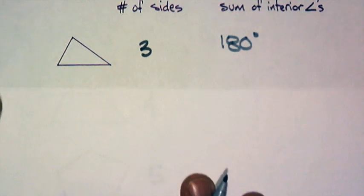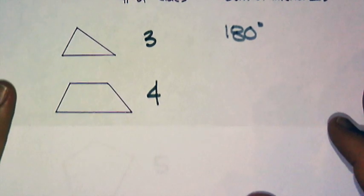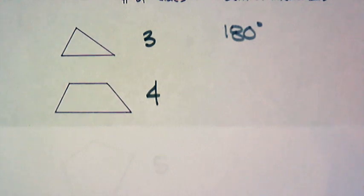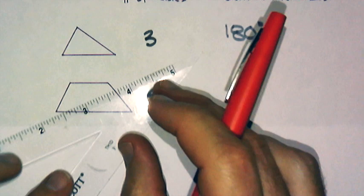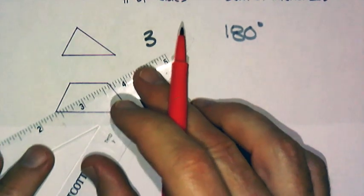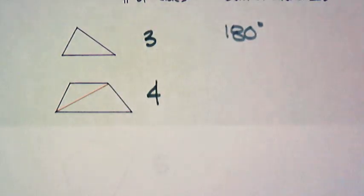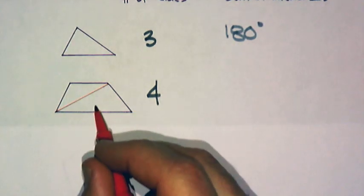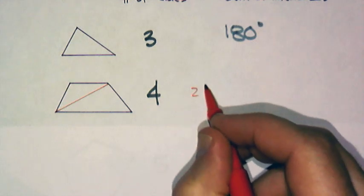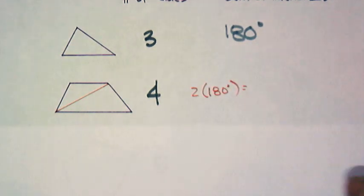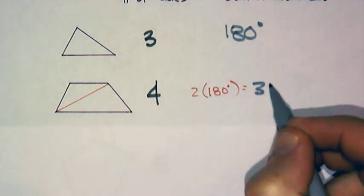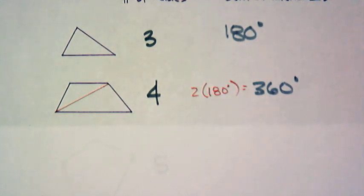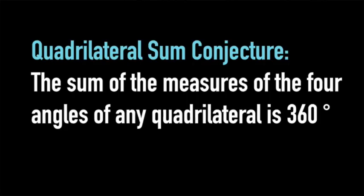Then we move on and add a side, and that would be a quadrilateral. Notice that I stayed away from a square or rectangle because not all quadrilaterals are squares and rectangles. Is this one also 360? I think the answer might be easily found if I take a diagonal and make it two triangles. There's 180, there's 180, so it's basically two 180s, and that equals 360. We can write a conjecture: the sum of the measures of the four interior angles of any quadrilateral is 360 degrees.